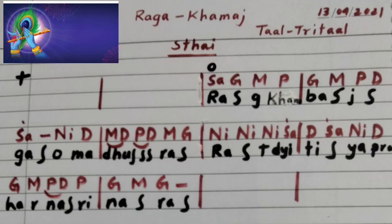Now I am singing the Swaralipi first, after that I will sing the Bandish. Repeatedly you will hear and try to sing after me. Sa Ga Ma Pa — Ga Ma Pa Dha — Sa Ni Dha — Ma Dha Pa Dha. Ma Ga Ni Ni — Ni Sa Dha — Sa Ni Dha — Ga Ma Pa Dha Pa Ga Ma Ga.